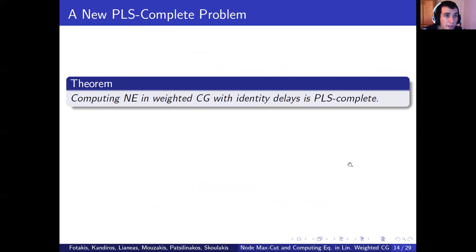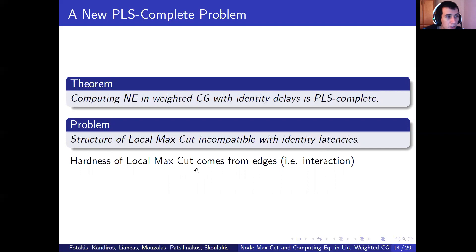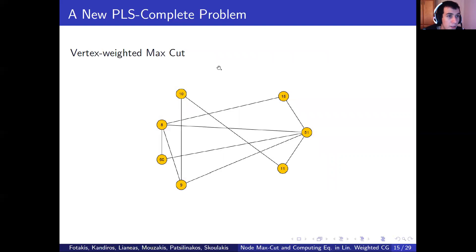As we said, in the case of identity delays, reducing from local max-cut runs into significant technical difficulties. This is because while only leaving a game with player weights, it becomes very hard to embed the typical max-cut instance in the combinatorial structure of the problem. The structures are essentially incompatible. Indeed, the hardness of local max-cut often comes from the edges, which represent the interaction between players or nodes.